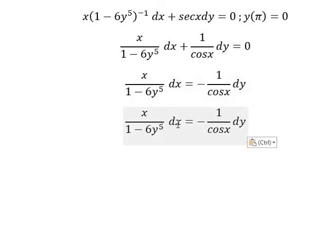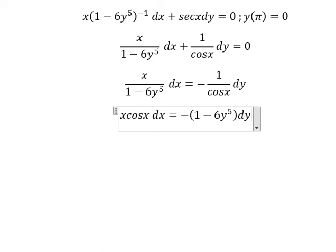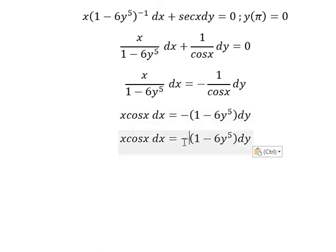Next, cosine x we put on the left, one minus 6y to the power of five we put on the right. So we have the negative, we change the sign of this one.